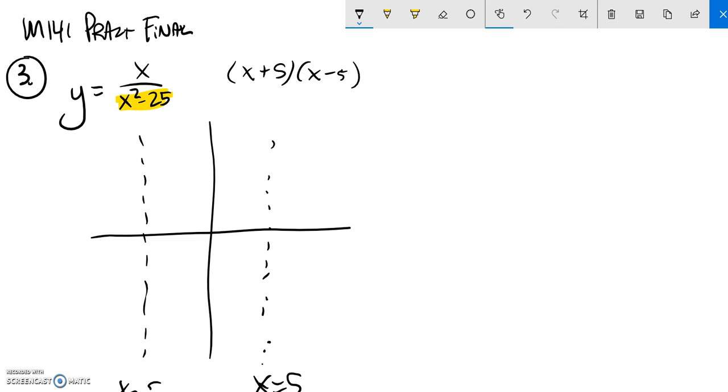Five. So some asymptotes here. Next thing I'm going to deal with is as x gets really large, what happens to that.